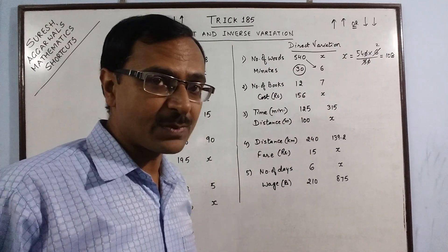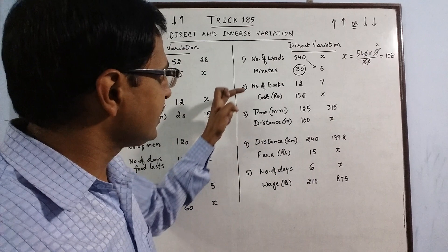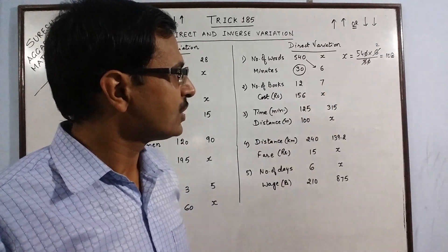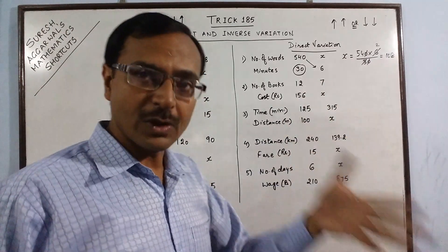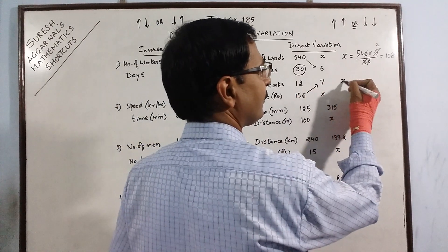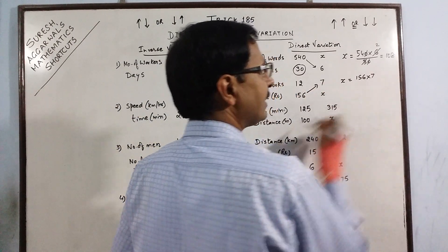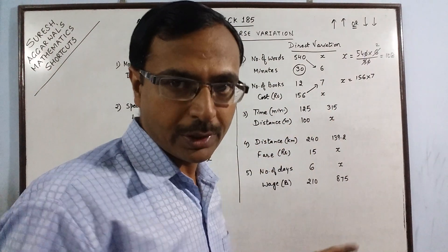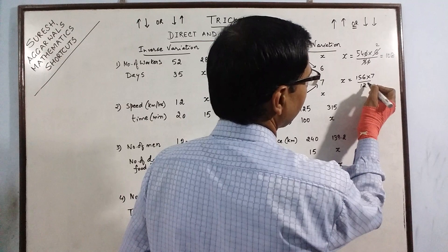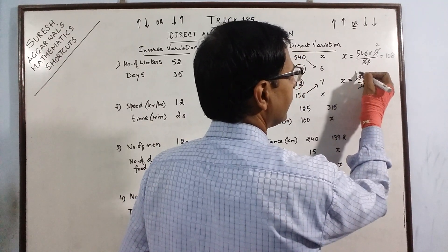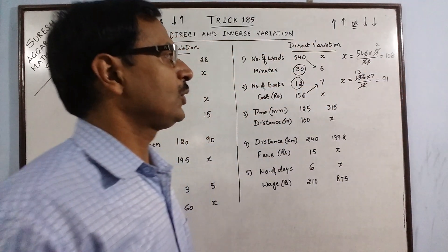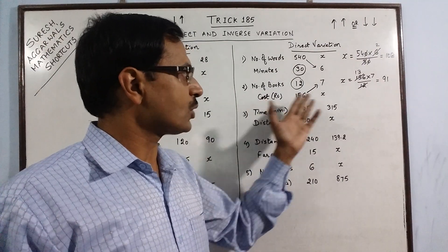If 12 books cost rupees 156, what is the cost of 7 books? When we decrease the number of books, the cost will also decrease, so this is direct variation. Multiply the two known values: 156 and 7, then divide by the third known quantity, 12. Cancelling 12 into 156 gives 13, and 13 into 7 gives 91. So the cost of 7 books is rupees 91.